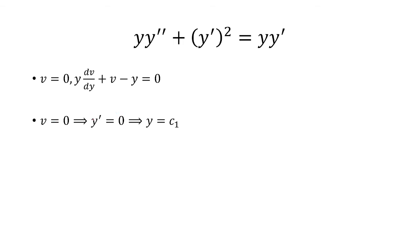v, remember, was y prime. So if v equals zero, that means y prime equals zero. The antiderivative of zero is just a constant, so one solution is y equals a constant.